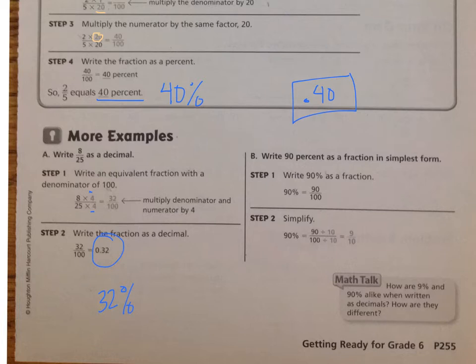Part B says write 90% as a fraction in the simplest form. So simplest form tells us that you may have to reduce. Step one, we have 90%. We need to write it as a fraction. So we take it straight, 90 out of 100. Now we need to simplify it. What is a factor of both of those?